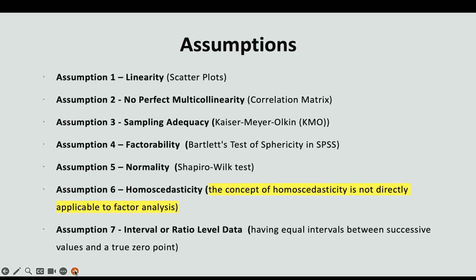Assumption 2: No perfect multicollinearity, which will be tested using a correlation matrix. If any combination of the 10 variables have a correlation above 0.8, that means there is multicollinearity which can affect the outcome. If we do see that, we will have to take action if that assumption is not met.